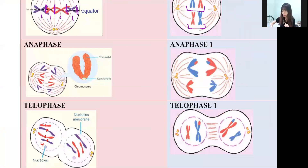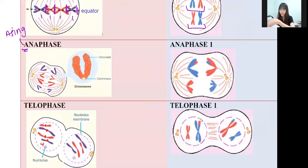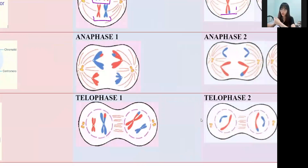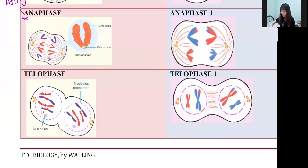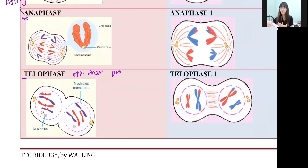Anaphase - in BM we call it separation, so all chromosomes will be separated. In anaphase one they'll be separated, and in anaphase two they'll also be separated. Then telophase is opposite to prophase - whatever happens in prophase will be reversed. For example, spindle fibers started to form in prophase, so in telophase the spindle fibers will start to disintegrate. The important thing in telophase is not the explanation but the drawing, because the drawings are different.